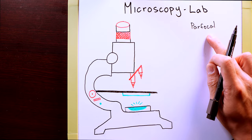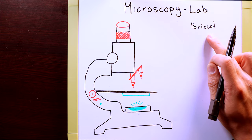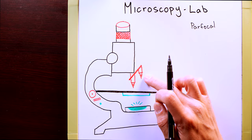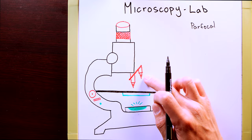And what a parfocal microscope means is that whenever you have an object in focus with one of these objective lenses, it will always be in focus in all of the other objective lenses.